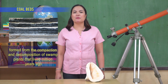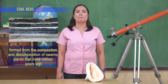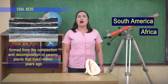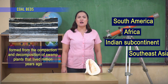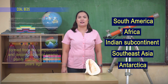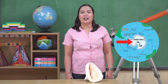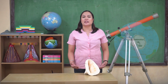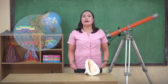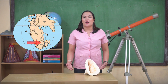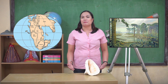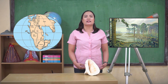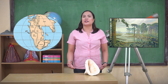Coal beds were formed from the compaction and decomposition of swamp plants that lived millions of years ago. These were discovered in South America, Africa, the Indian subcontinent, Southeast Asia, and even in Antarctica. The current location of Antarctica could not sustain a substantial amount of light, yet there is a substantial quantity of coal in it. It only means that Antarctica must have been positioned in a part of the Earth where it once supported large quantities of plant life. This leads to the idea that Antarctica once experienced a tropical climate, and thus might have been closer to the equator.